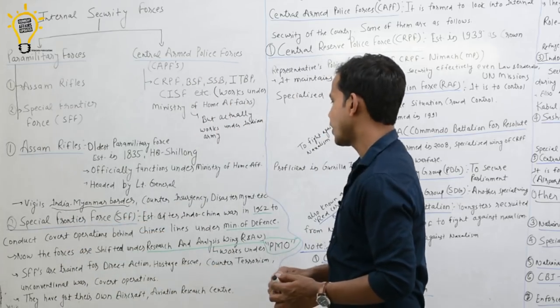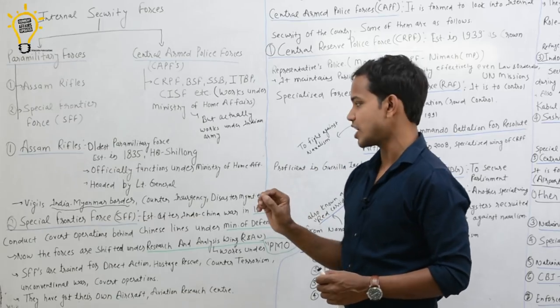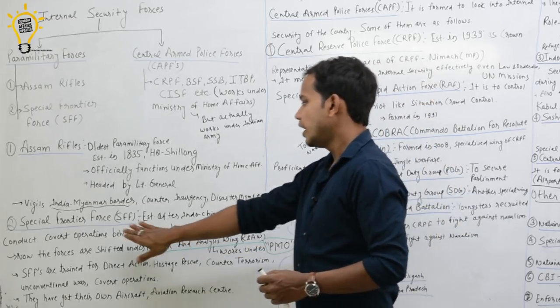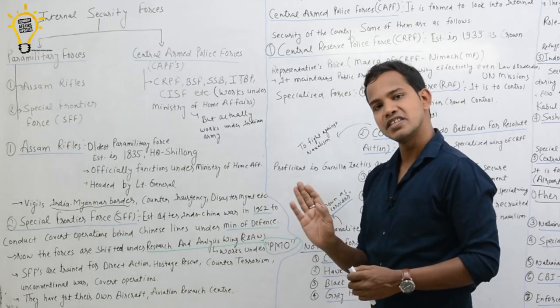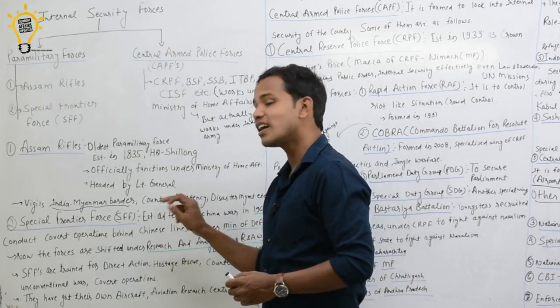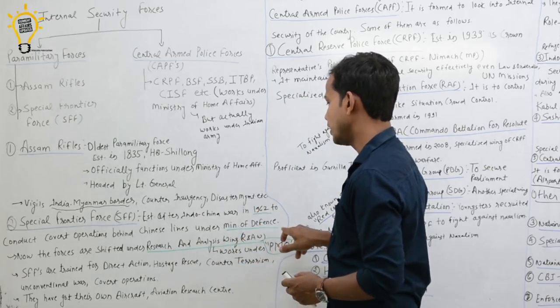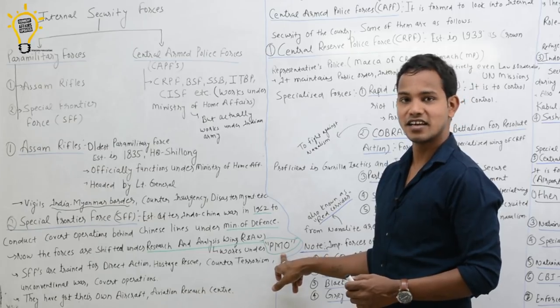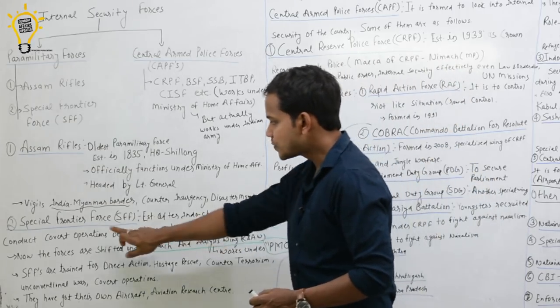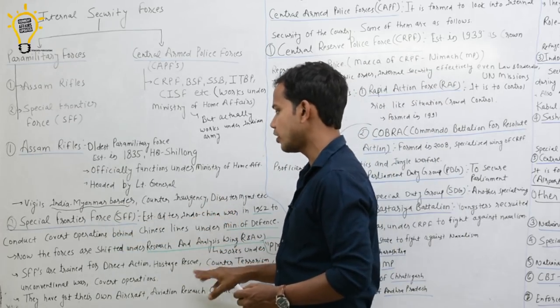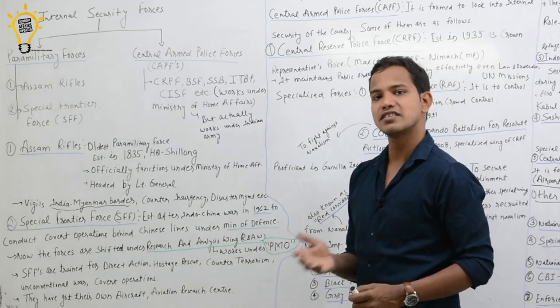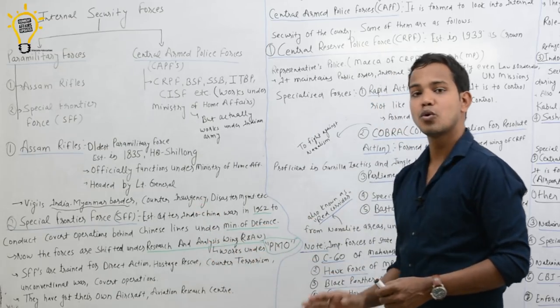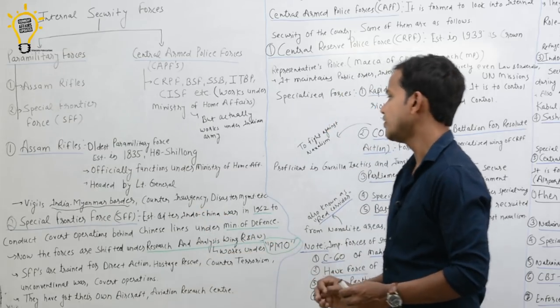Special Frontier Force was created after the Indo-China war in 1962, especially for many covert operations behind Chinese lines in the border areas. When it was built, it was in the Ministry of Defense, but now the department has been shifted to India's External Investigation Agency, Research and Analysis Wing, R&AW. Research and Analysis Wing directly works under the ambit of Prime Minister's Office. Special Frontier Forces also come under R&AW. Personnel are specially trained for direct action, hostage rescue, counter-terrorism, unconventional war, covert operations. There are very few agencies which have their own aircraft. Special Frontier Forces have got their own aircraft, even aviation reserve center.